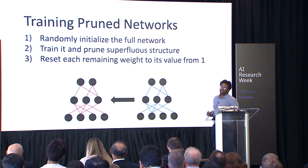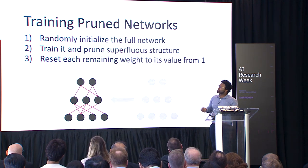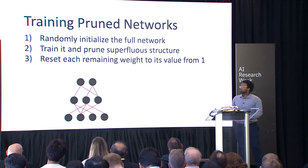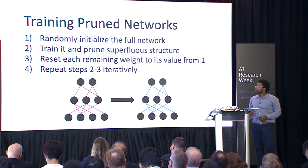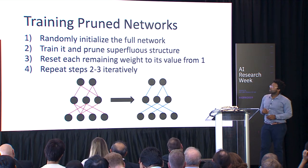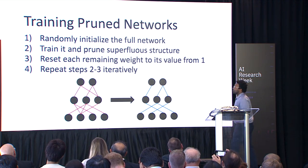Here's the twist in our technique: we still start by randomly initializing the full network, then train it and prune superfluous structure using our preferred metric. But instead of fine-tuning, we backport these architectural discoveries to the initialization at time zero. We take those irrelevant architectural findings and apply them to that original initialization. Then we can do this iteratively — do another pass, backport again — and we get a smaller network that trains just as well.